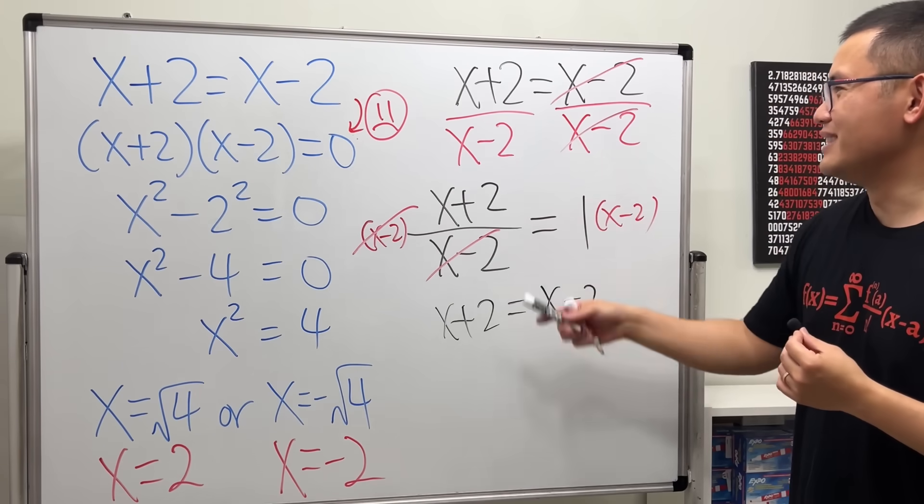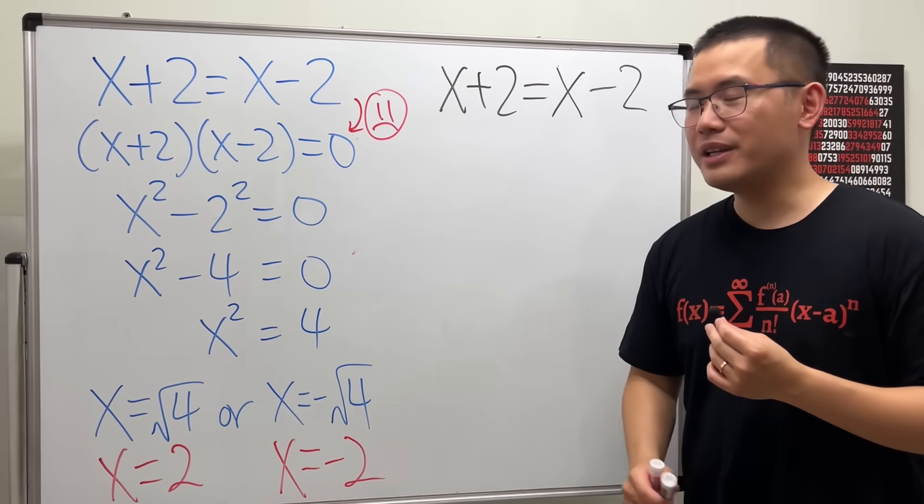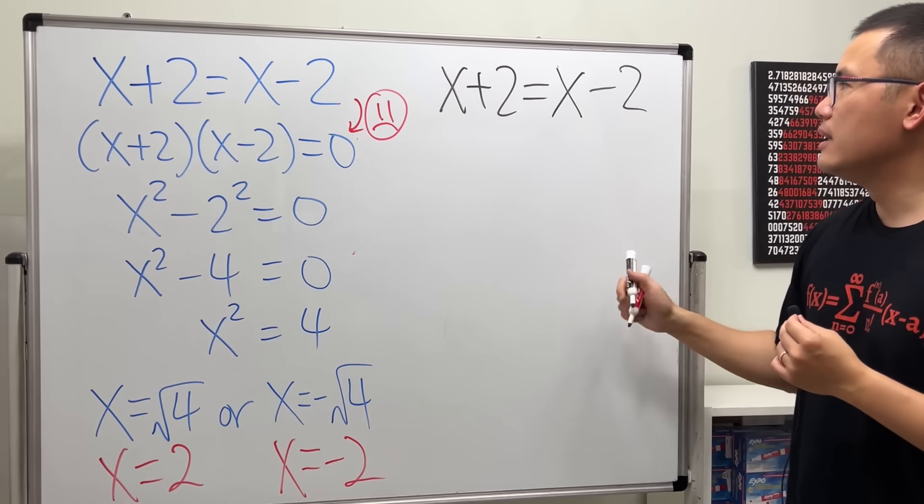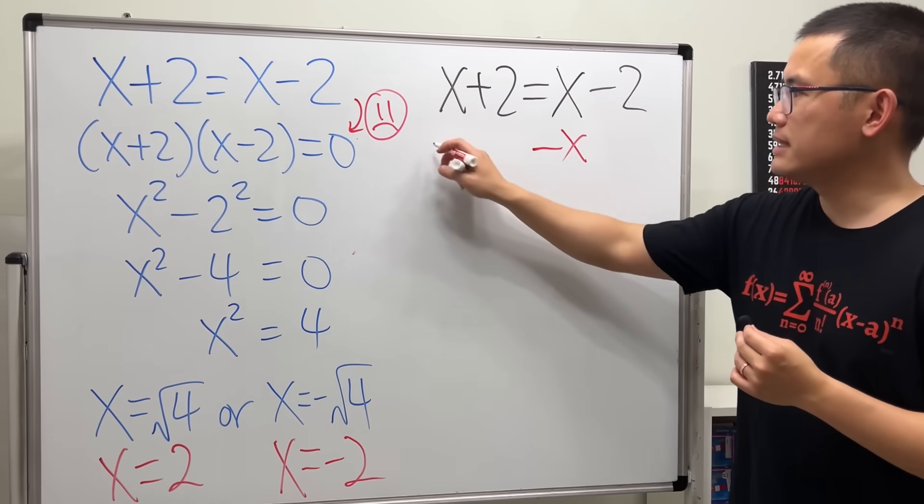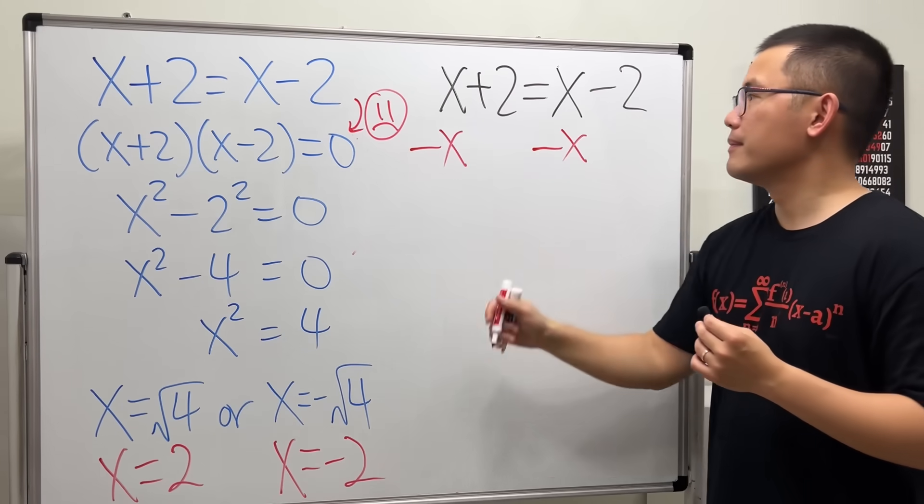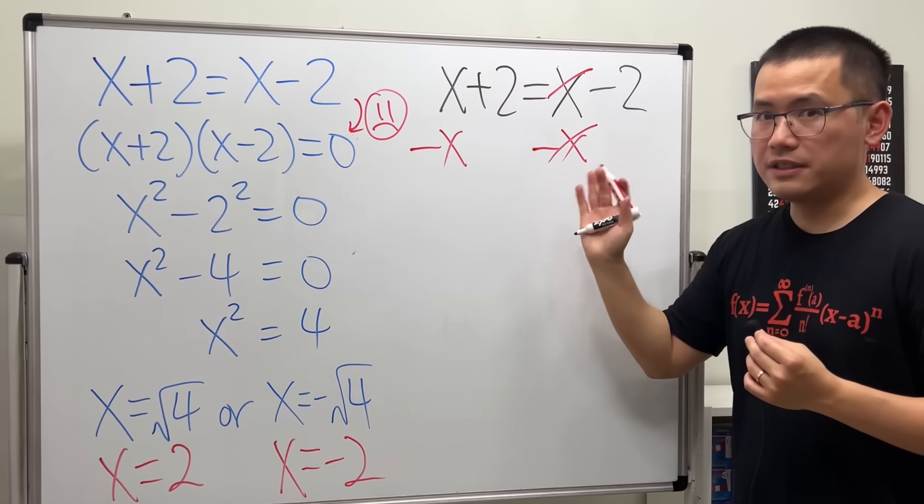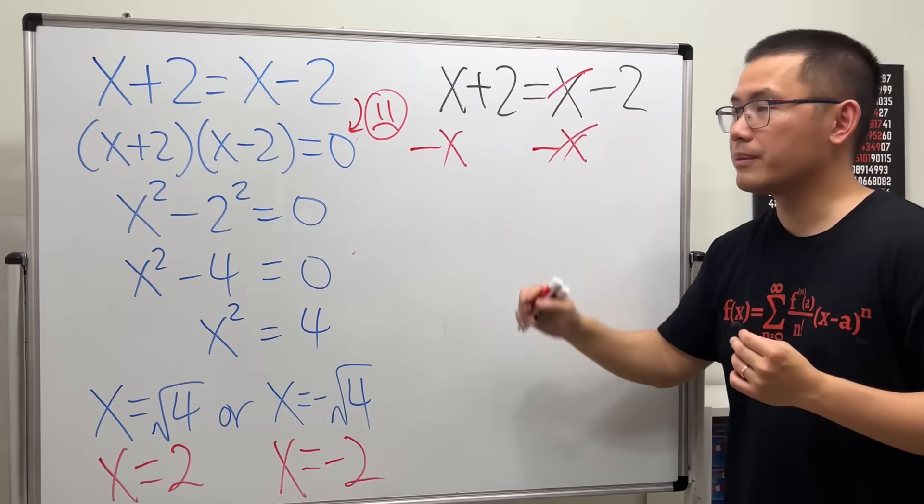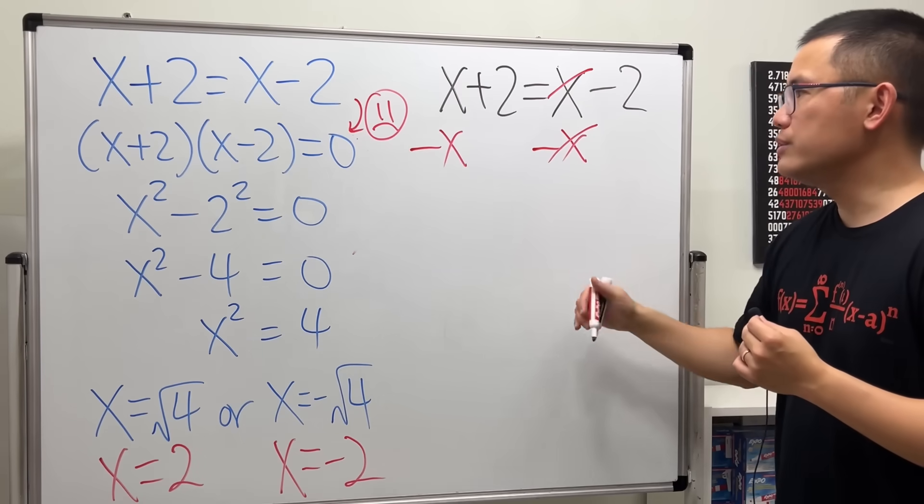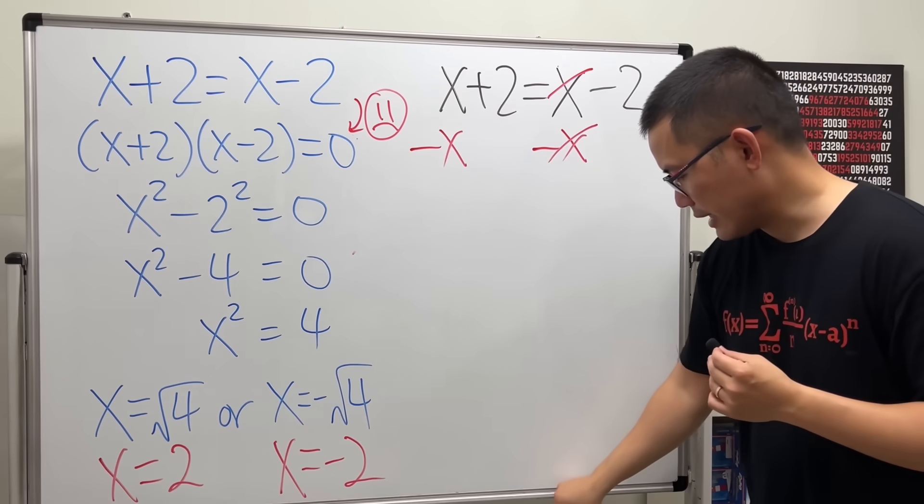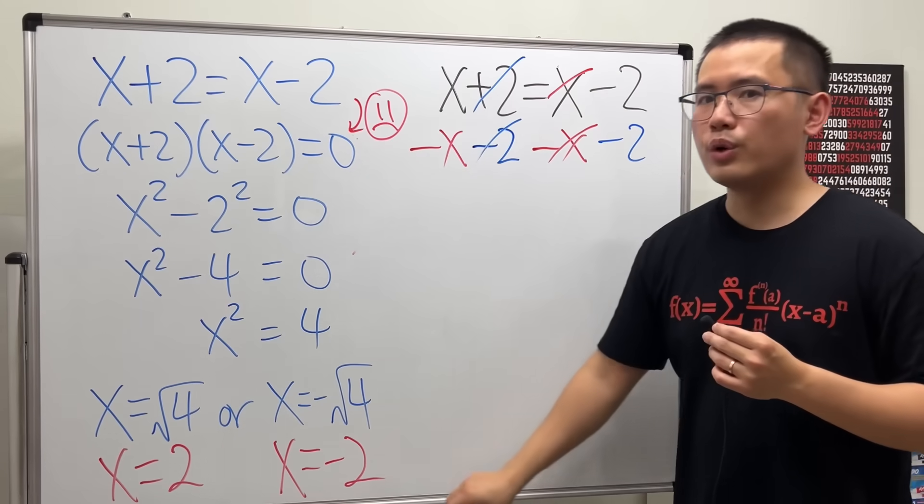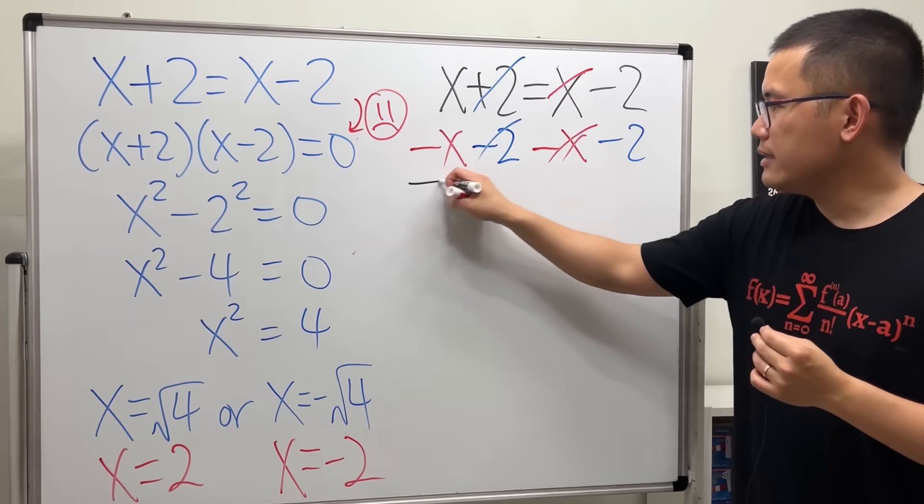So, in order for us to solve this equation, we will have to collect all the x's on one side and the numbers on the other. So, let's minus x on both sides. This is the correct way to bring just the x term to the other side. So, you see, x minus x gives us 0. So, we don't divide, we subtract here for this term. And then, I will have to bring this number to the other side. And to do so, let's subtract 2 on both sides. Because this way, 2 minus 2 is equal to 0.